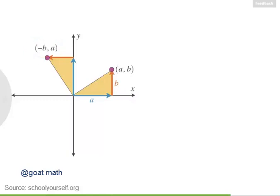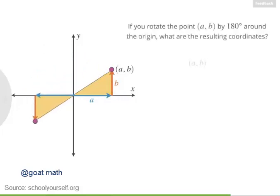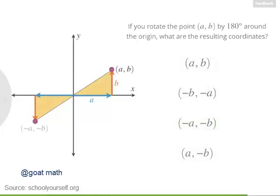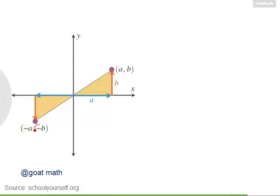And this will always be true for any values of a and b. To rotate a point by positive 90 degrees around the origin, you can always swap the x and y coordinates and then multiply the new x-coordinate by negative 1. Next, let's rotate our point by 180 degrees around the origin. The resulting coordinates are (negative a, negative b). So whenever you rotate a point by 180 degrees around the origin, you can flip the sign of both the x and y coordinates.